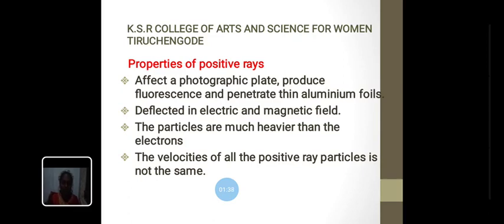Properties of positive rays: These rays affect a photographic plate and produce fluorescence and penetrate thin aluminum foils. They are deflected by electric and magnetic field. The directions of deflection indicate that they are positively charged.